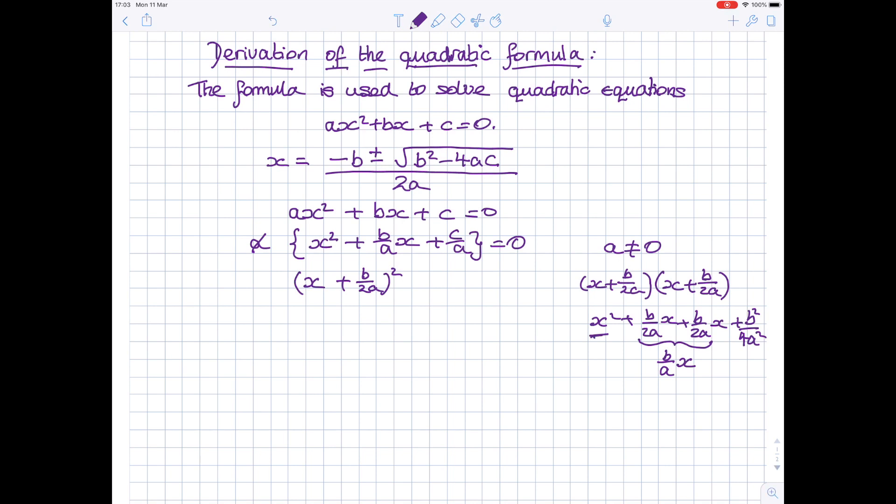So, if you compare what we've got, we've got x squared there, we've got x squared there, b over a x, b over a x, but I've got this odd b squared over 4a squared term. So, I'm going to take that off, and then add on the term I do want, which is the c over a.